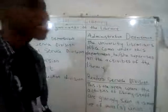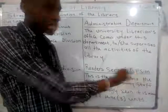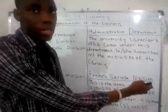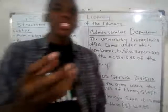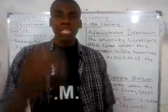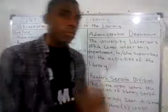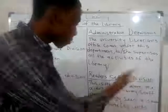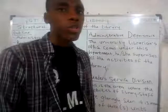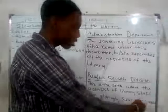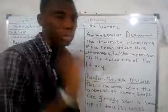Secondly, we talk about the reader service division. This is another structural division of the library, and it is the area where the activities of the library staff are most visibly seen — where all their efforts and work are clearly on display. The reader service division is made up of three units.